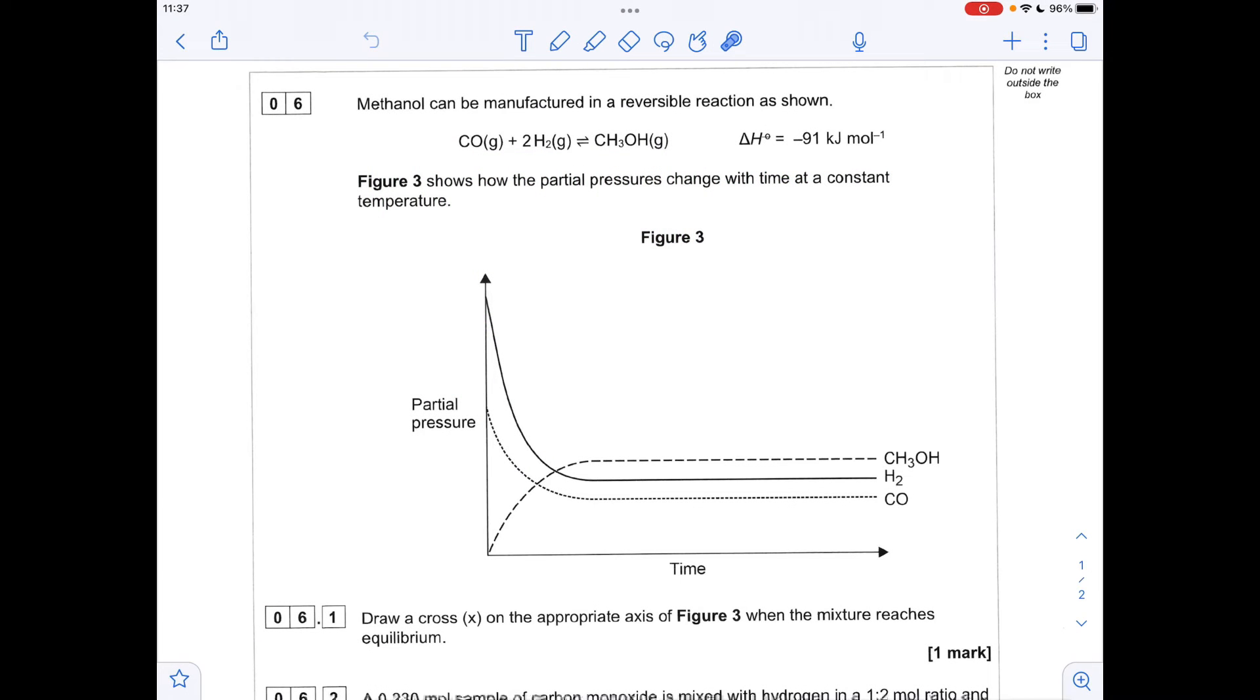Okay, so we'll make a start. First thing we've got to do is draw a cross on an appropriate axis where the mixture reaches equilibrium. It's basically the point in time on the x-axis where the partial pressures remain constant. So it's where all of these flatline, so it's going to be around about there.